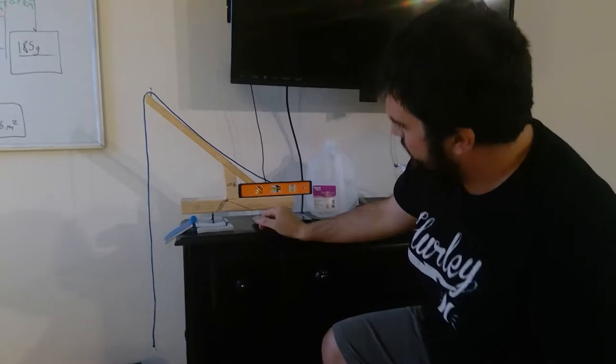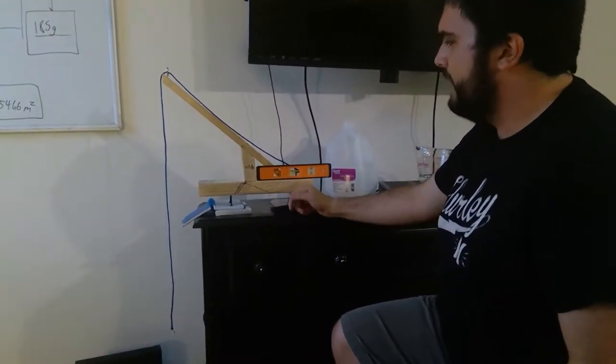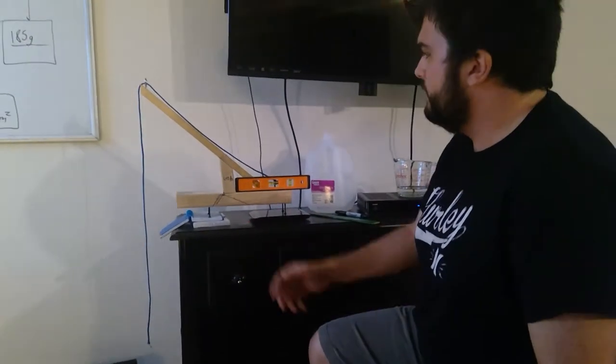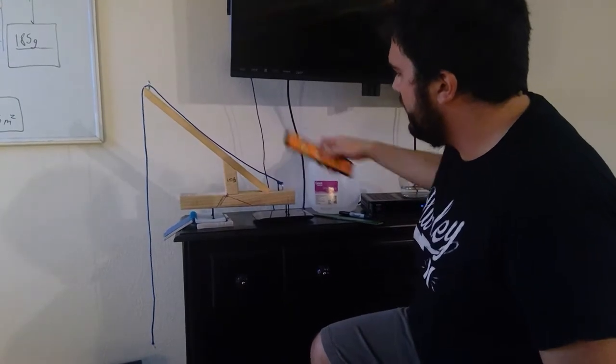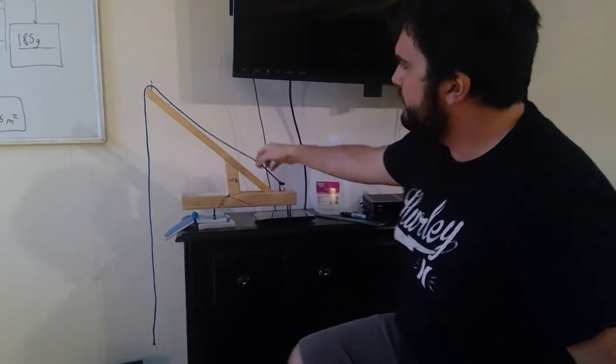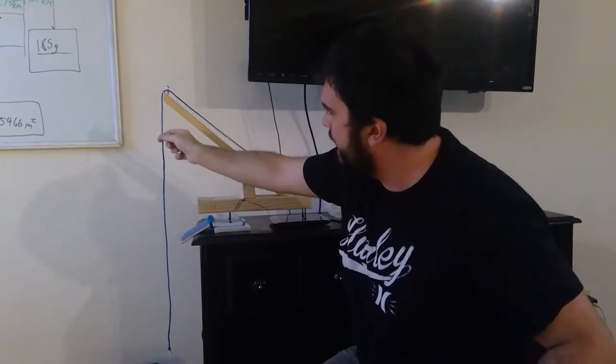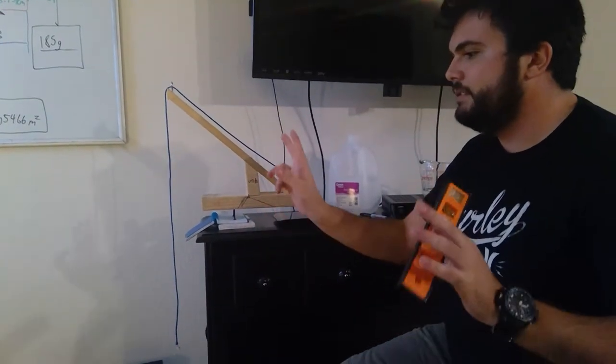Then we screwed in four screws underneath acting as the outrigger legs underneath the crane, and then we attached eye hooks and tied the string along to act as the crane's cable.